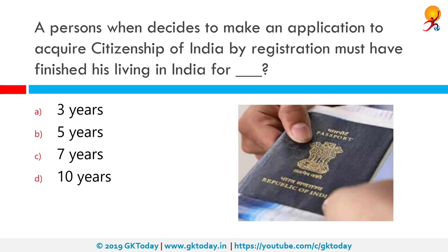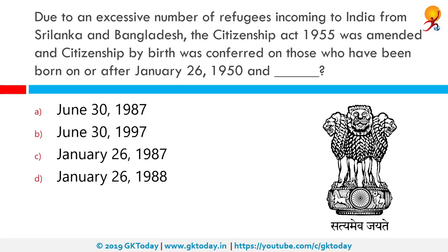A person who decides to acquire citizenship of India by registration must have lived in India for how many years? The correct answer is 5 years. As per Section 5(1)(g) of the Citizenship Act 1955, a person registered as an overseas citizen of India for 5 years and residing in India for 1 year out of those 5 years is eligible to apply. Due to excessive refugees from Sri Lanka and Bangladesh, the Citizenship Act 1955 was amended, and citizenship by birth was conferred on those born on or after January 26, 1950 and before June 30, 1987.